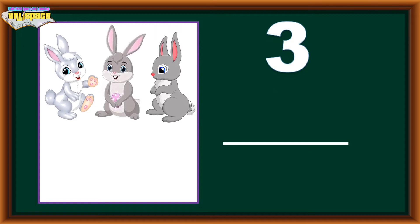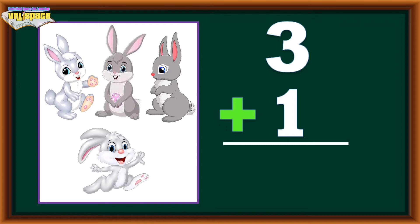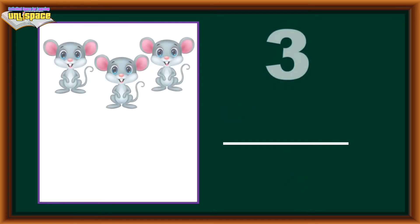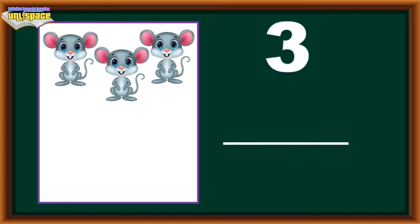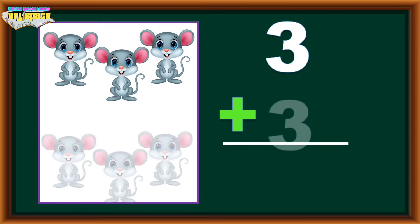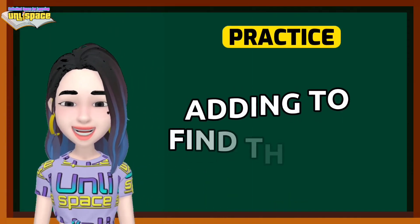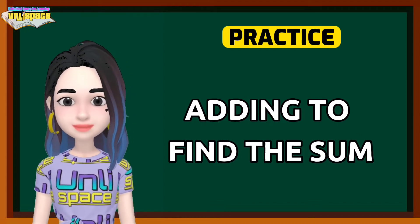3 bunnies plus 1 bunny equals 4 bunnies. 3 rats plus 3 rats equals 6 rats. Now it's your turn — do some more practice in adding to find the sum.